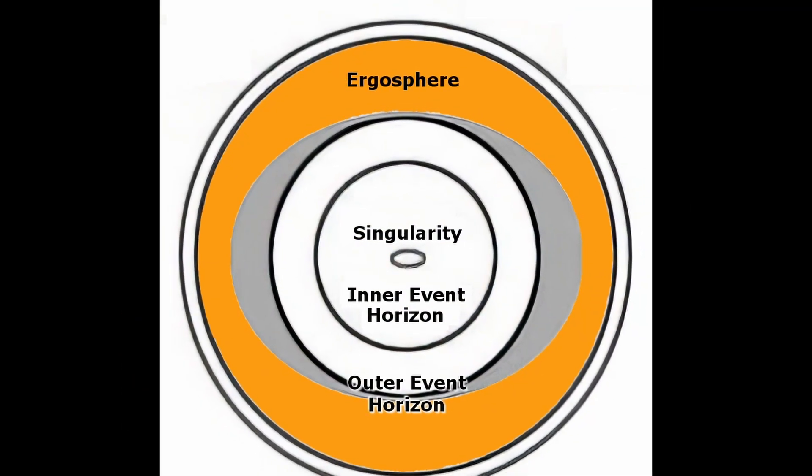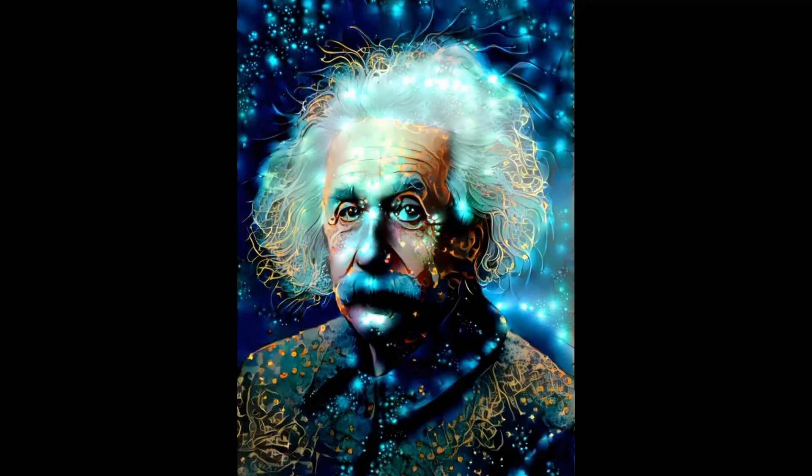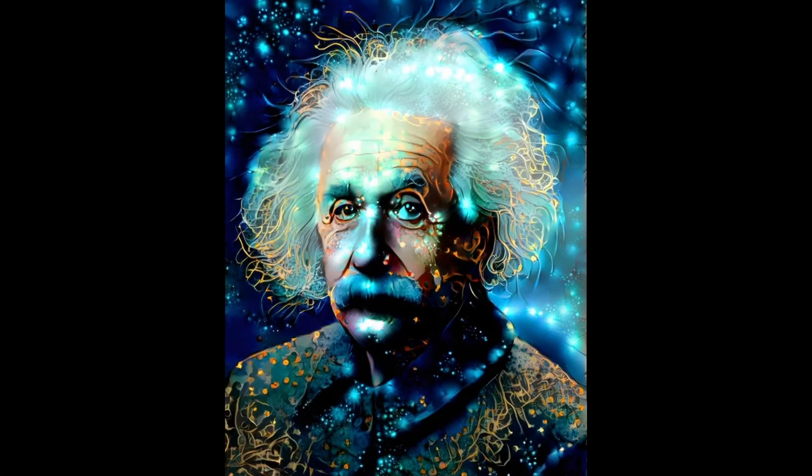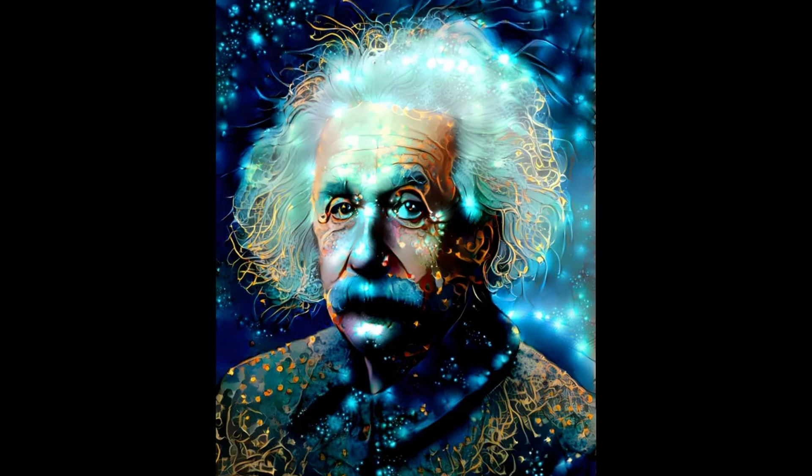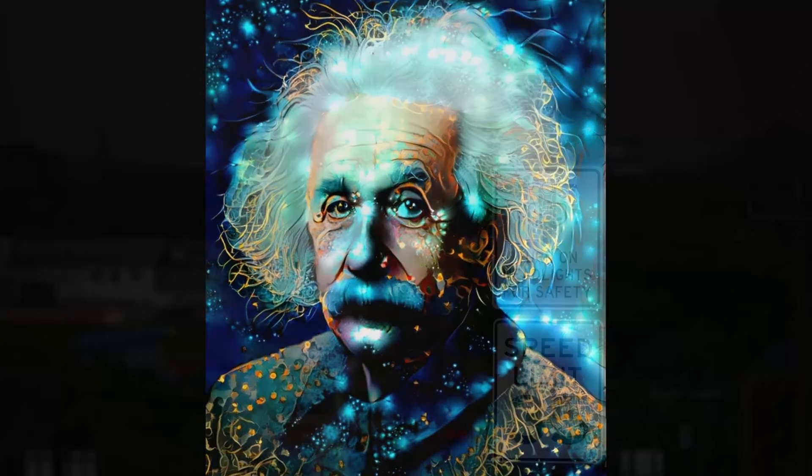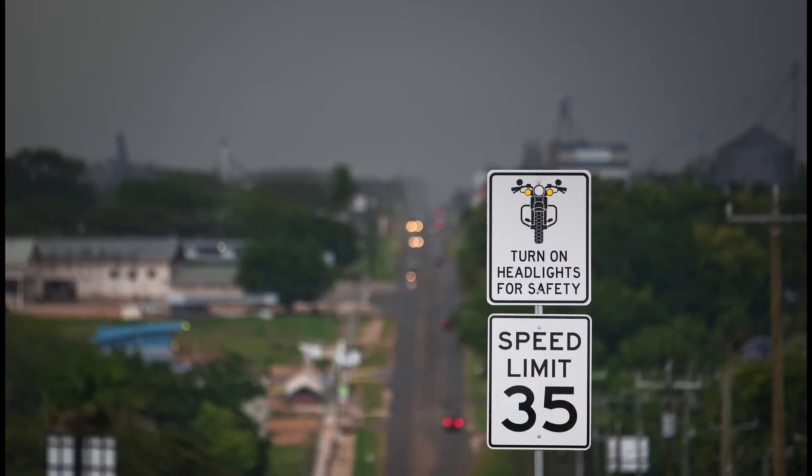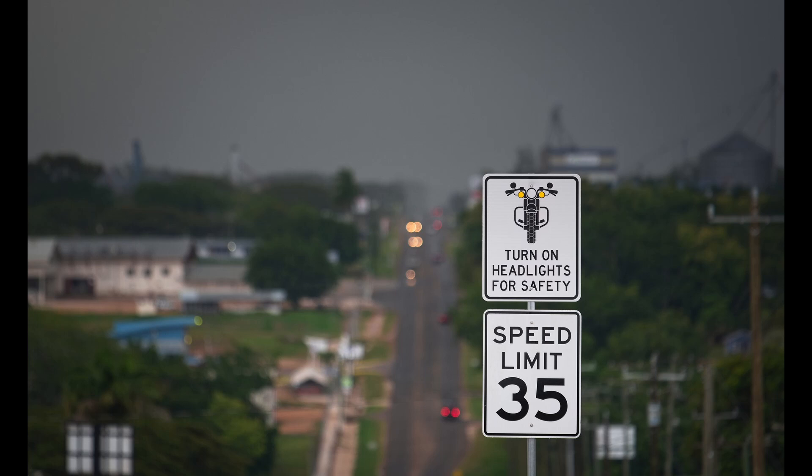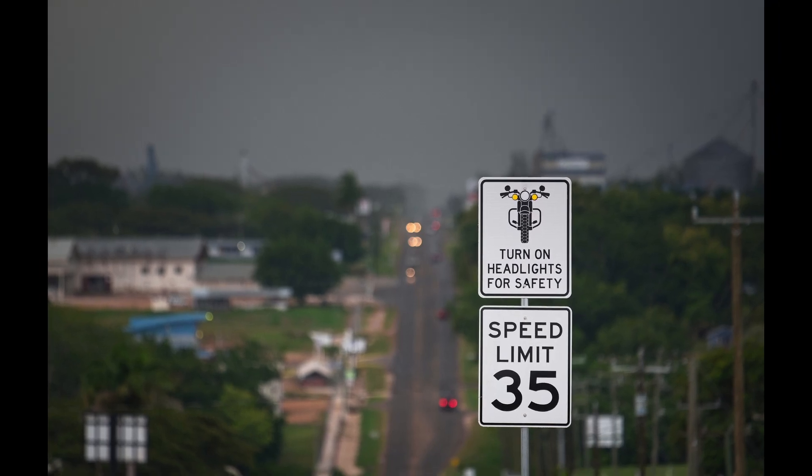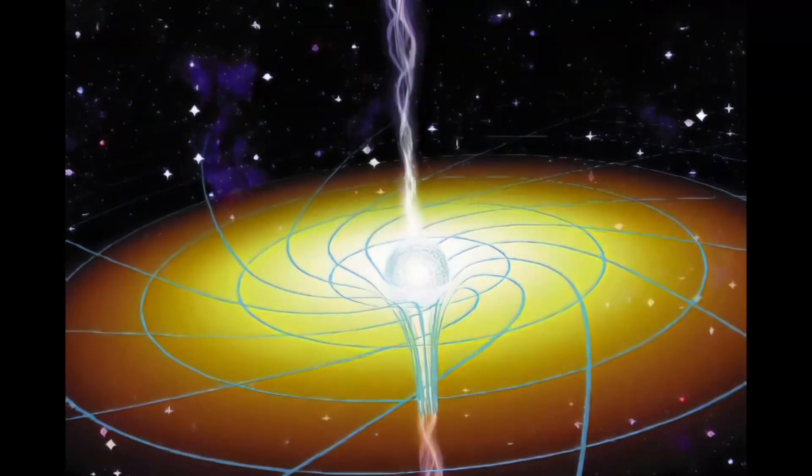This results in something that should seemingly not be possible. In the ergosphere, from our perspective on the outside, objects can move faster than light. This is possible because the objects aren't technically breaking the cosmic speed limit, because from their own frame of reference, they aren't actually moving faster than light. But from our view on the outside, they are.